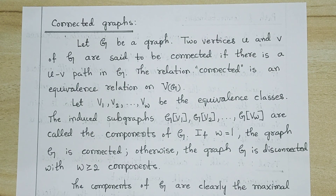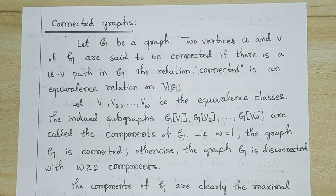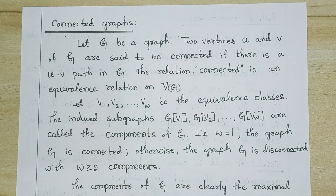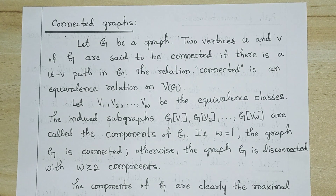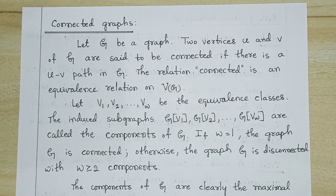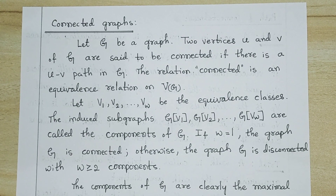Let us define a connected graph. Let G be a graph and let u and v be two vertices in G. Those two vertices are said to be connected if there is a path between them. We know that a path is a walk with distinct vertices.